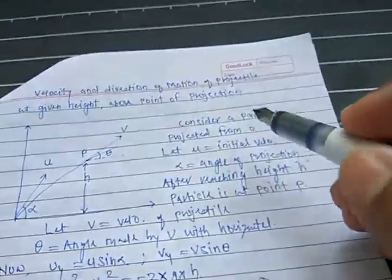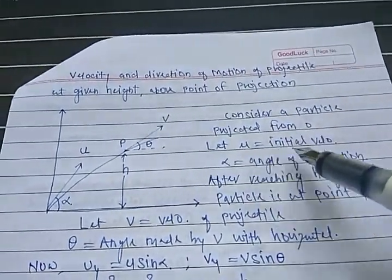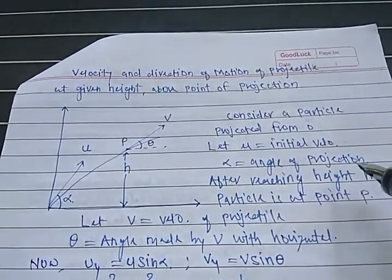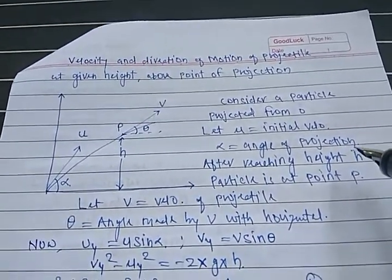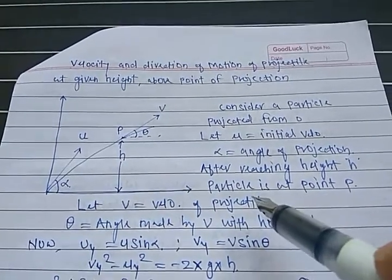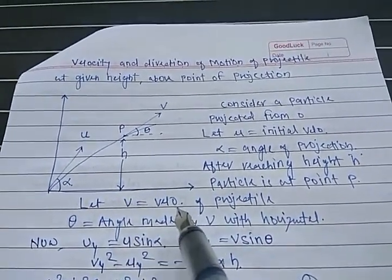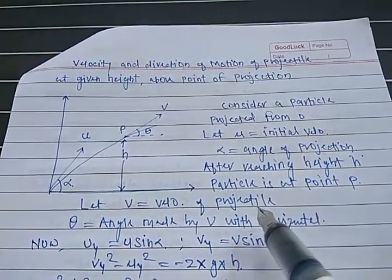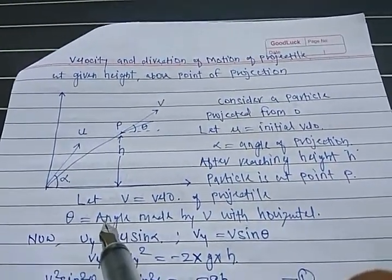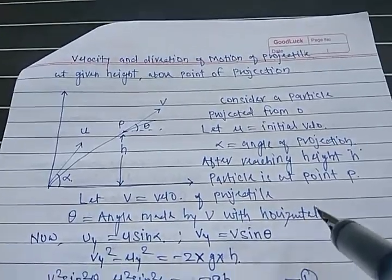Consider a particle projected from O. Let U be the initial velocity and let alpha be the angle of projection. After reaching height H, the particle is at point P. Let V be the velocity of the projectile at point P, and let theta be the angle made by V with the horizontal.